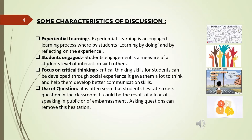Now we see some Characteristics of Discussion. First, Experiential Learning — an engaged learning process whereby students learn by doing and by reflecting on the experience. Second, Student Engagement — a measure of a student's level of interaction with others. Third, Focus on Critical Thinking — critical thinking skills for students can be developed through social experience; it helps them think more and develop better communication skills. Fourth, Use of Questions — students often hesitate to ask questions in the classroom due to fear of speaking in public or embarrassment, but asking questions can remove this hesitation.